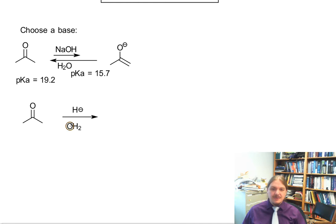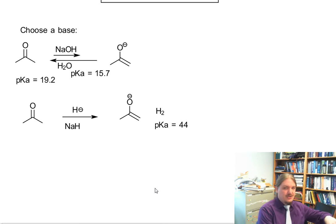Let me tell you about some bases folks tend to use. Here's hydride, so hydride is available as sodium hydride. And the conjugate acid of hydride is hydrogen gas, which is a gas and bubbles up out of the reaction. Even if it wasn't a gas, the pKa of hydrogen is like 44.